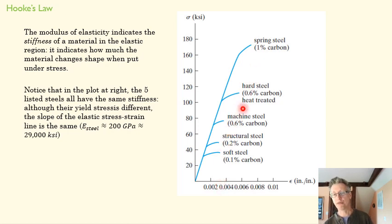And that E, the slope of this line, is the same everywhere. They all have different yield points. Some of them are going to start to yield a lot earlier than others, but their stiffness is the same.